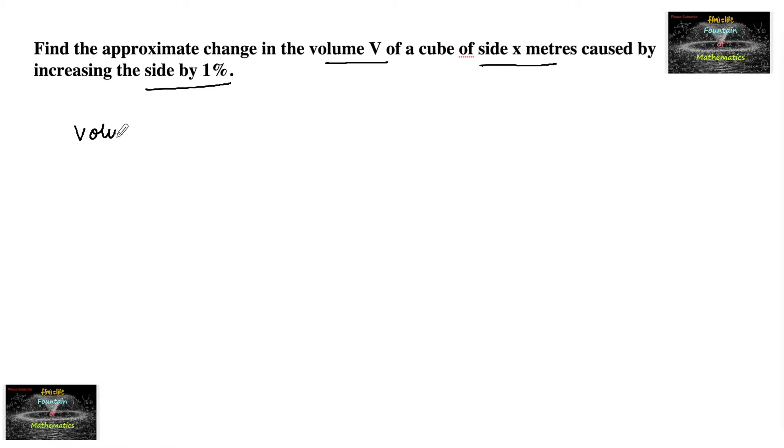Volume of cube of side x meters V equals x³ cubic meters. We need to find the approximate change in the volume V when increasing the side by 1%.